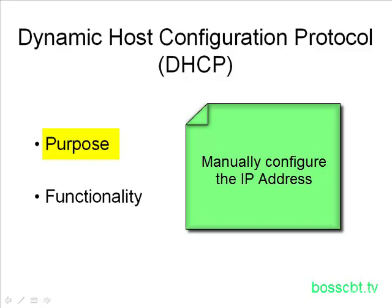An example of that is on your PC — you can configure PCs for IP addresses, and you can configure routers, switches, and web servers as well. Pretty much anything can be configured manually. But that works okay only up to a point. What if your network is really big and you have a lot of users coming and going all day long? The manual approach just wouldn't work — it's not efficient and it doesn't scale very well.